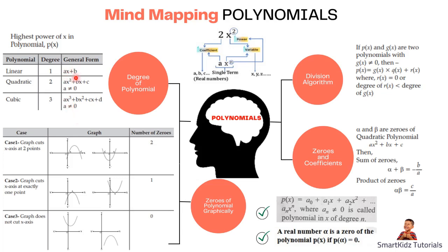In all cases — ax + b, ax² + bx + c, or ax³ + bx² + cx + d — it is very important that the leading coefficient a is not equal to 0. If a equals 0 in ax + b, we only have b and it is no longer linear. If a equals 0 in the quadratic form, it becomes linear. If a equals 0 in the cubic form, it becomes quadratic.